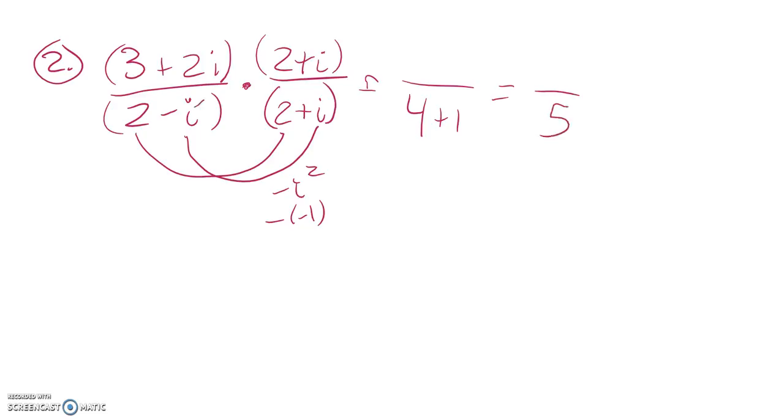And because that middle term drops out, negative i times 2 is negative 2i, i times 2 is 2i. That becomes 0. That's why we chose that 2 plus i.